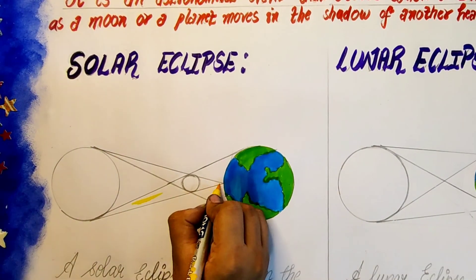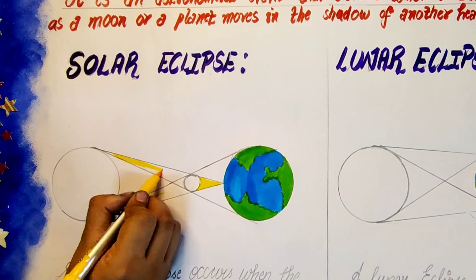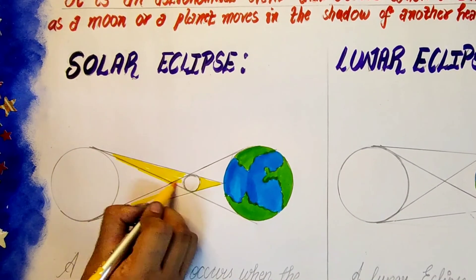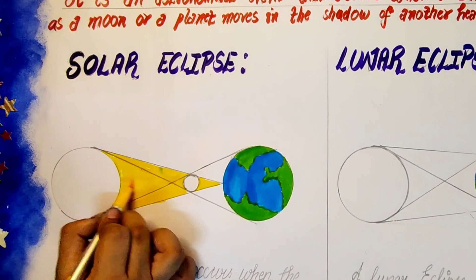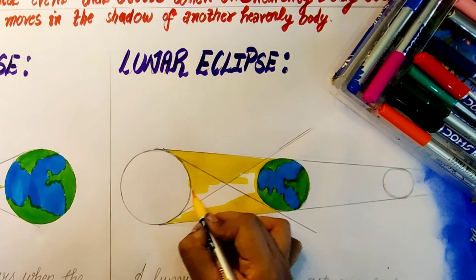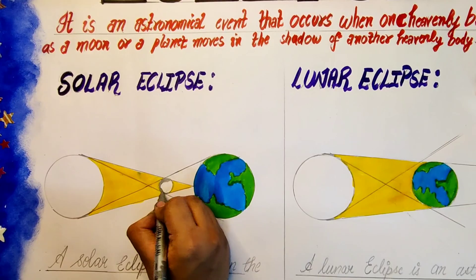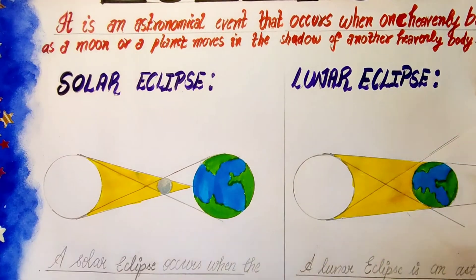Now for the rays of the sun, here I'm using lemon yellow water pen. Now for both the moons I'm using gray water pen.